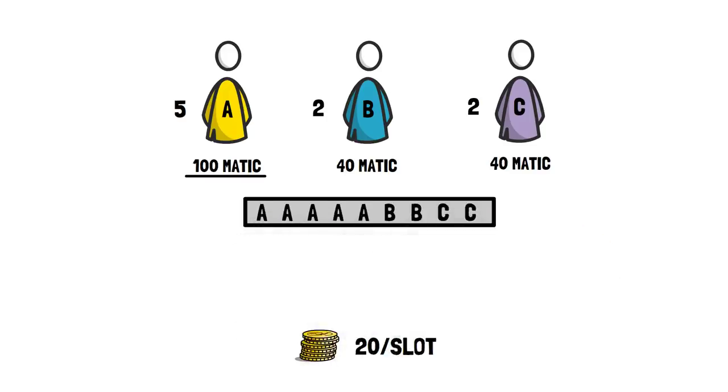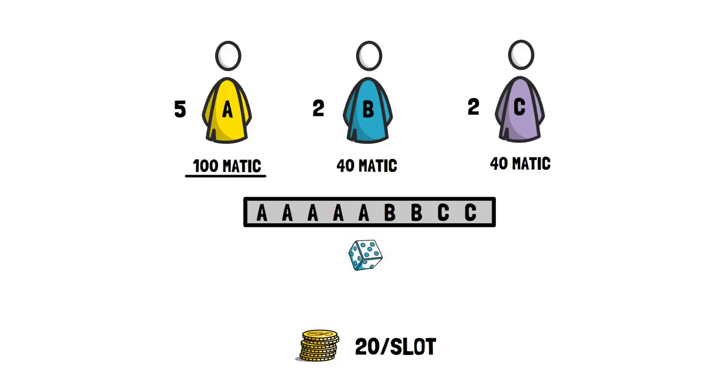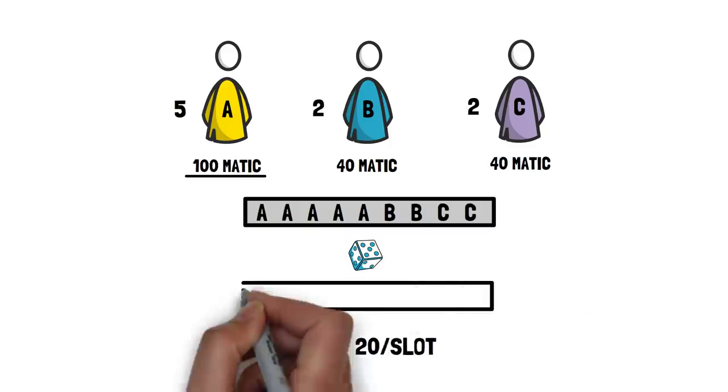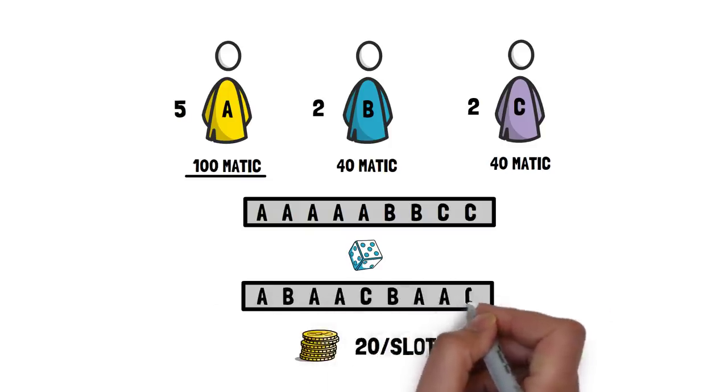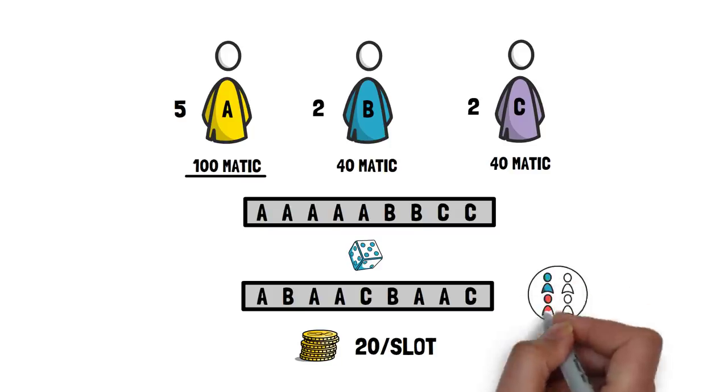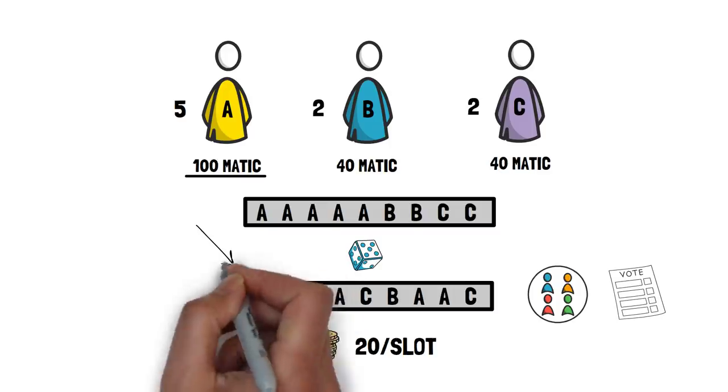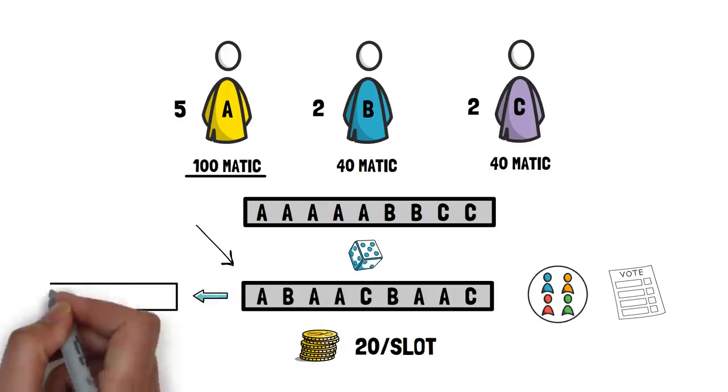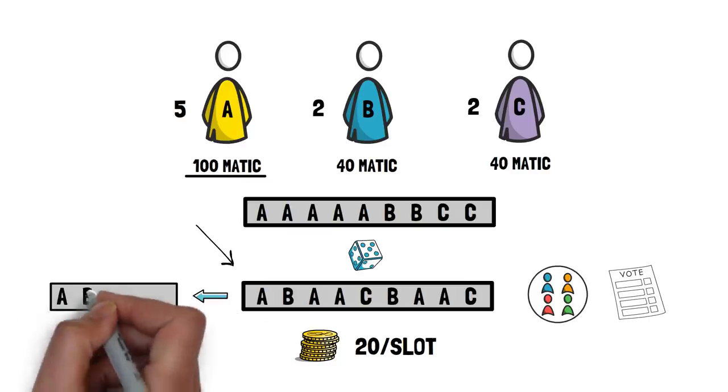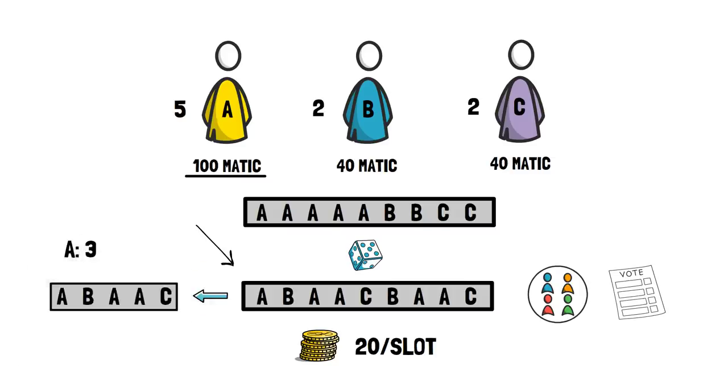Using the historical Ethereum blocks as a seed, we shuffle this array. After shuffling the slots using the seed, we get this array. Now, depending on the producer count maintained by validator's governance, we pop validators from the top. For example, if we want to select 5 producers, we get the producer set as A, B, A, A, C. Hence, the producer set for the next span is defined as the following.